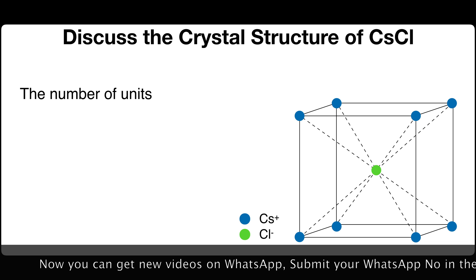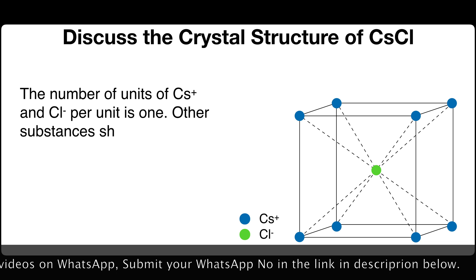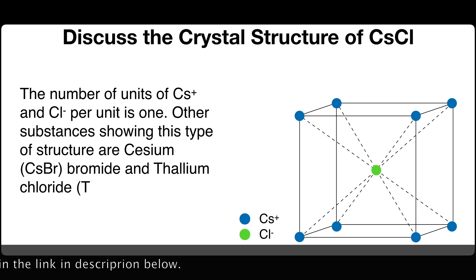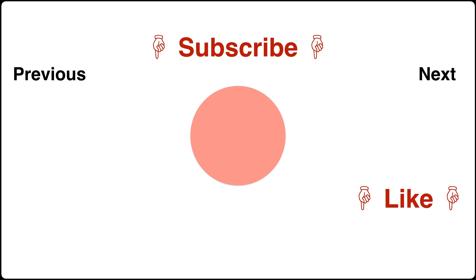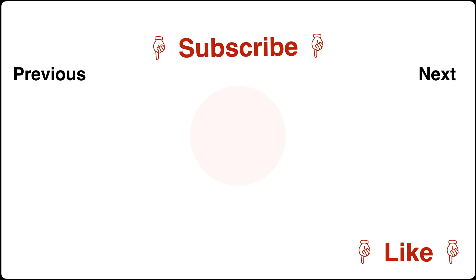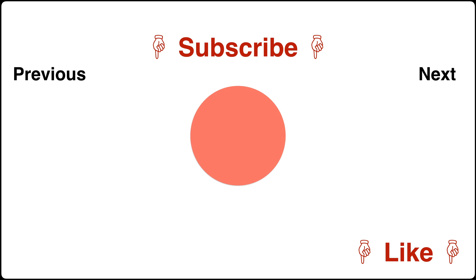The number of units of cesium and chlorine per unit cell is one. Other substances showing this type of structure are cesium bromide and thallium chloride.